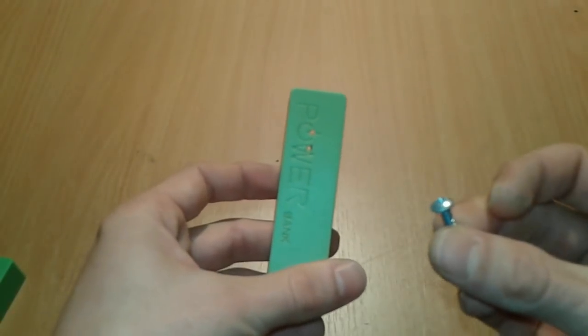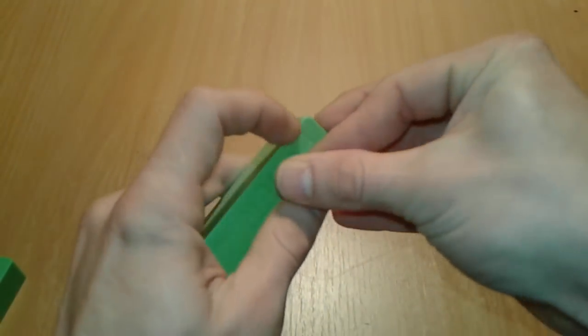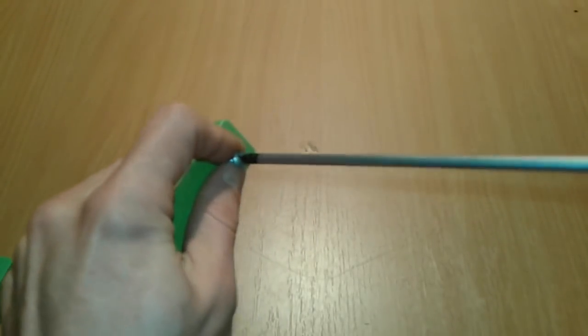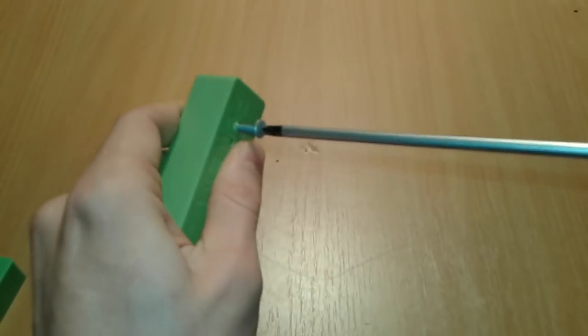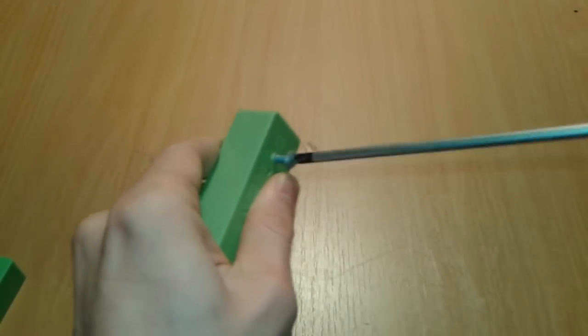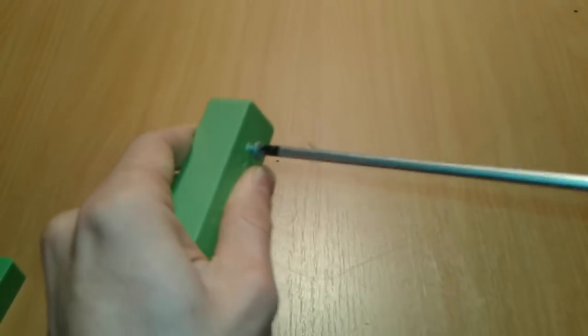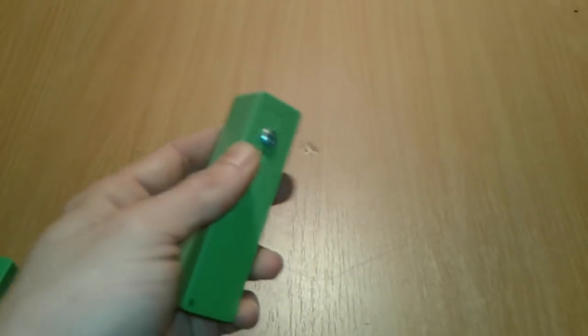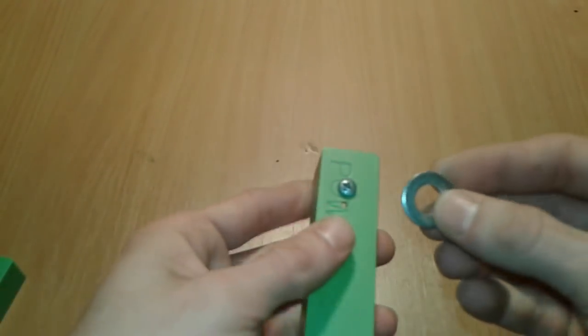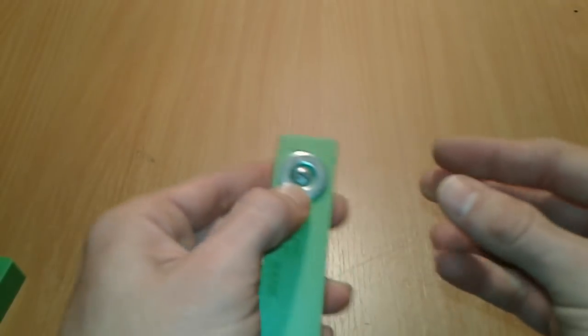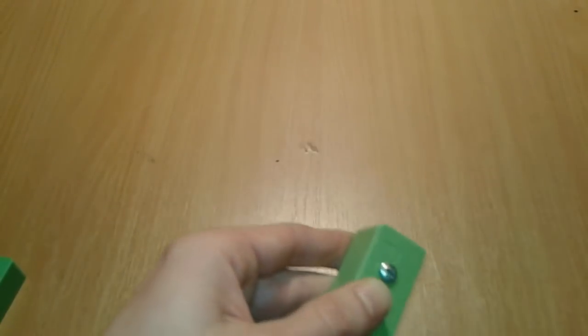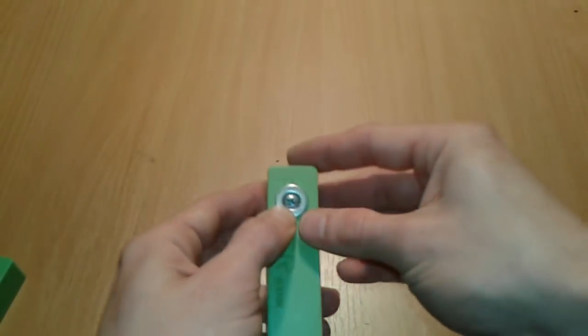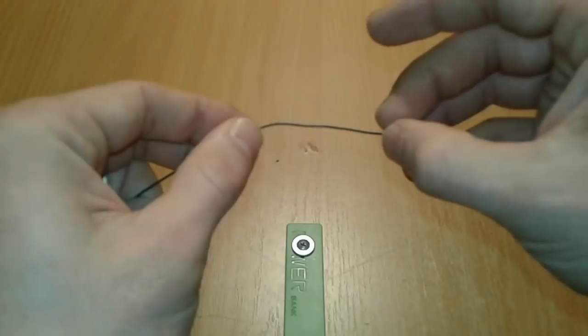Then we're going to take our screws and screw it into one of the holes, very easy. And then we're going to take our washer and put it on top of it. This is kind of big, so we can use another smaller one.